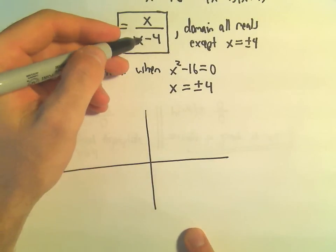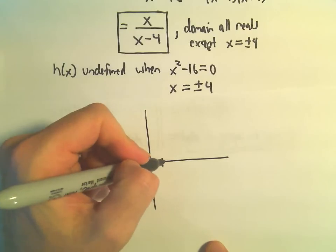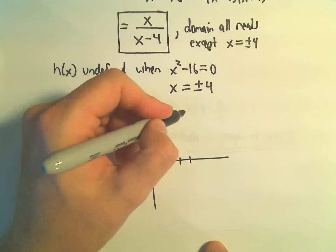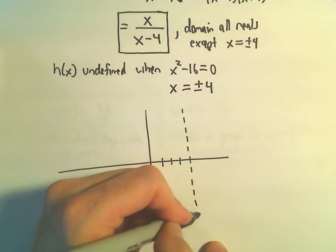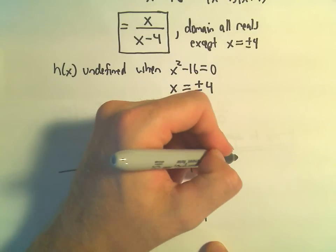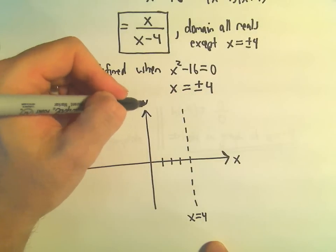So let's see, we said we had a vertical asymptote at positive 4. So 1, 2, 3, 4. So there's our vertical asymptote, x and y.